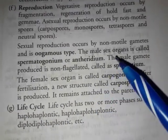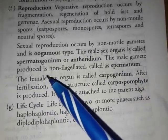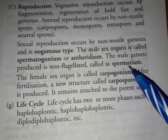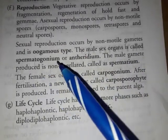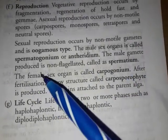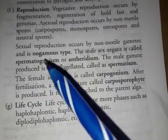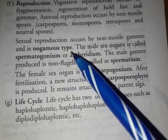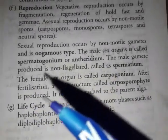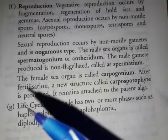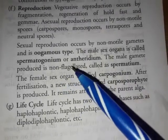The male sex organ is called the spermatogonium or antheridium. The male gamete produced is non-flagellated — this is very important. The male gamete is small and active. The female gamete is very large and non-motile — it is passive. Both male and female gametes are non-flagellated.